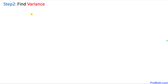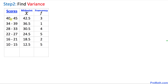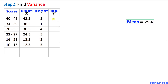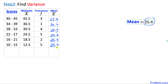In step 2 we are going to calculate the variance. From our previous steps we know the score values, the midpoint x, and the frequencies. In the next column, for mean x̄, we fill in 25.4 across the board for all rows.